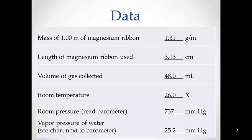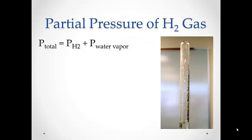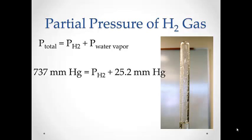Here is a sample set of data. First, let's find the partial pressure of the hydrogen gas inside our collection tube. Our measured room pressure is 737 millimeters of mercury, and the room temperature is 26 degrees Celsius. Looking at our chart, we find that the water vapor pressure at that temperature is 25.2 millimeters of mercury. We subtract the water vapor pressure from the room pressure, and that gives us a partial pressure of hydrogen gas of 711.8 millimeters of mercury.